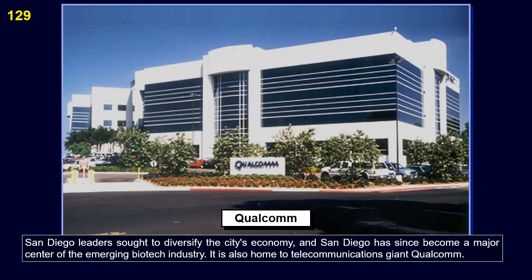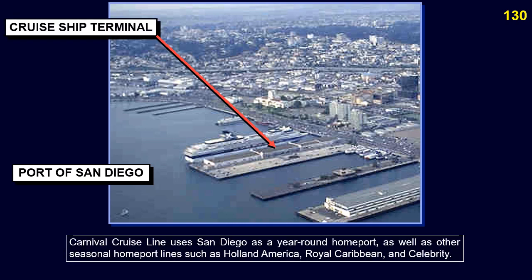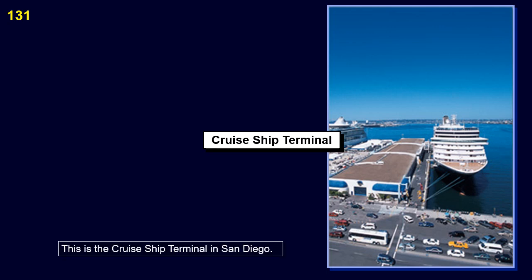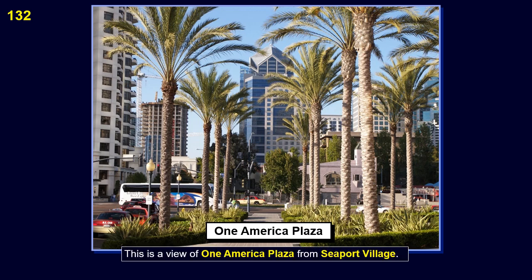It is also home to telecommunications giant Qualcomm. Carnival Cruise Line uses San Diego as a year-round home port, as well as other seasonal home port lines such as Holland America, Royal Caribbean, and Celebrity. This is the cruise ship terminal in San Diego. This is a view of One America Plaza from Seaport Village.